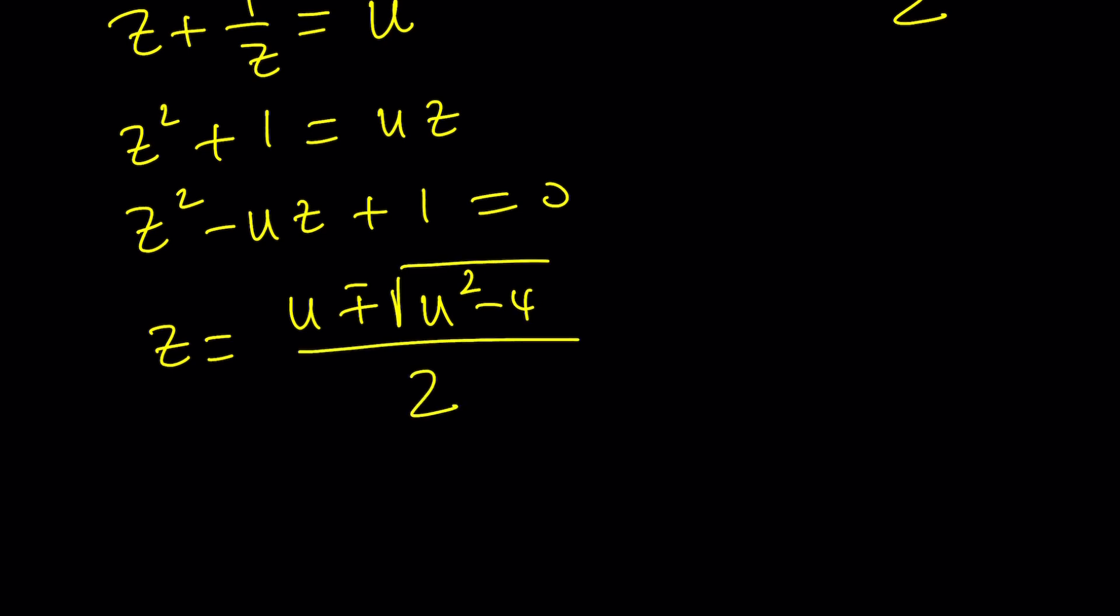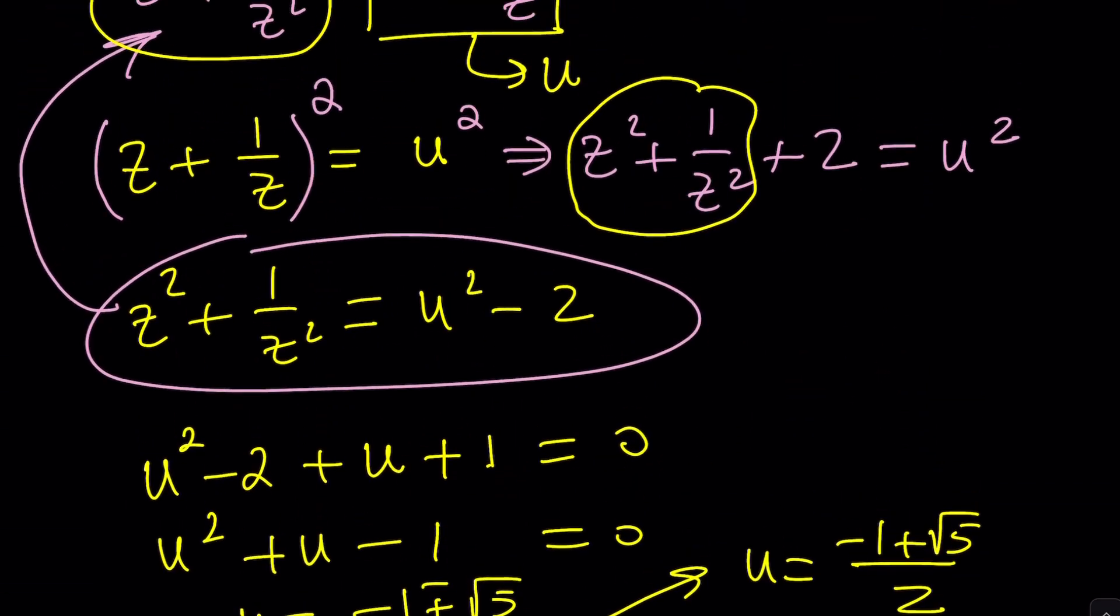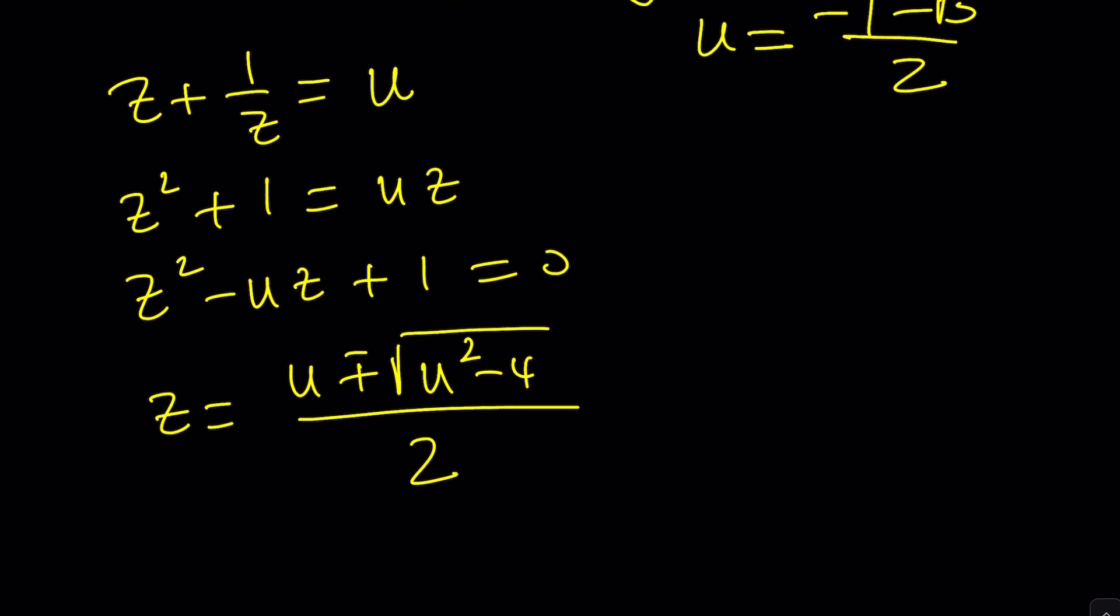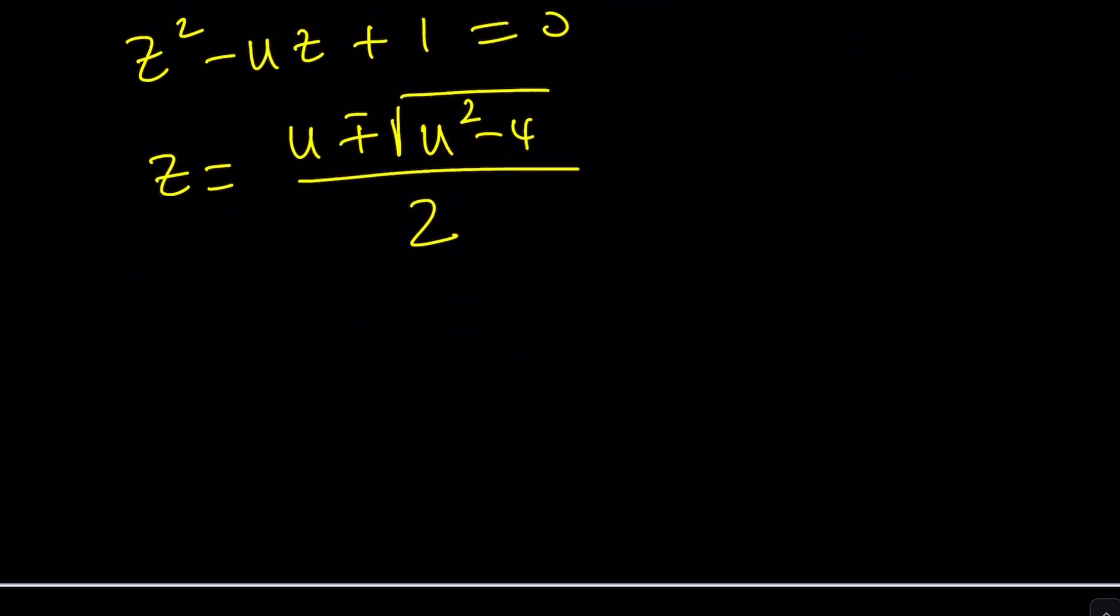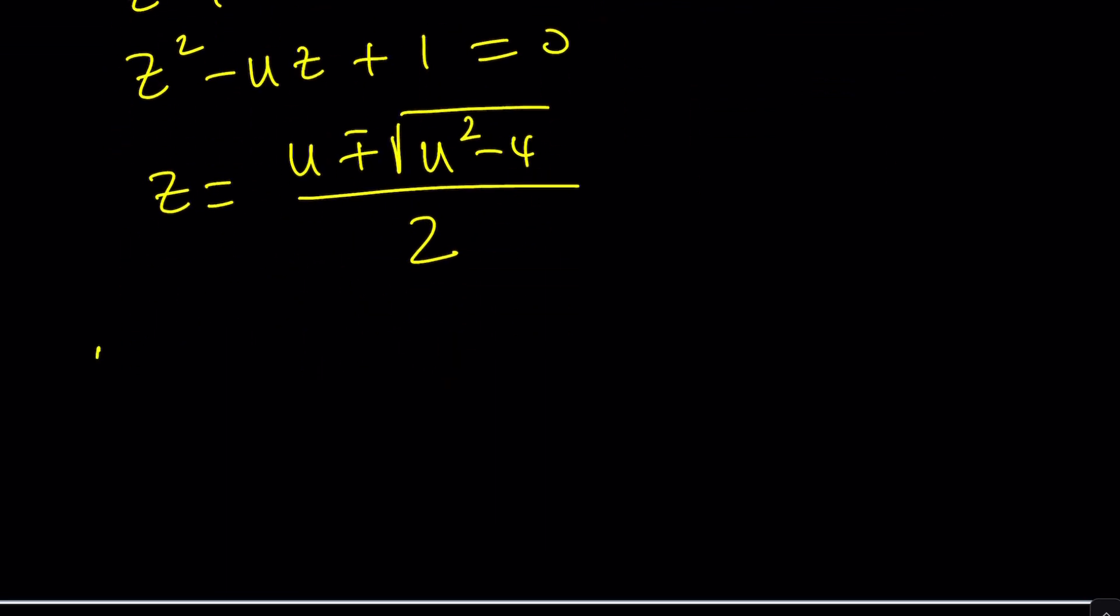From here z becomes negative b plus or minus the square root of b squared minus 4ac divided by two. Notice that there are two z values depending on the values of u, but then u has two separate values, which means you should be getting four different values at the end, which makes sense because this is a quartic equation. So you should be getting four solutions, even though they may not always be different.